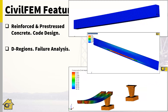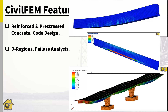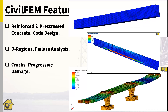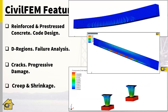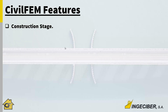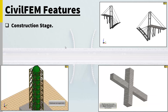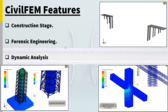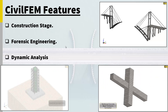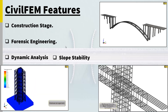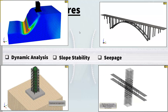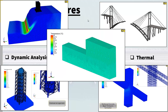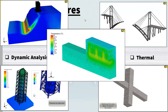For concrete there are many types of analysis included. Besides code checking and verification through standards, you can analyze regions studying cracks, and for long-term features, creep and shrinkage. As well as construction stage analysis, activation and deactivation of elements, including forensic engineering and all types of dynamic analysis, slope stability for geotechnics. It's a package where you have a lot of solutions, including thermal heat transfer analysis, available in the expert license which has all the capabilities.